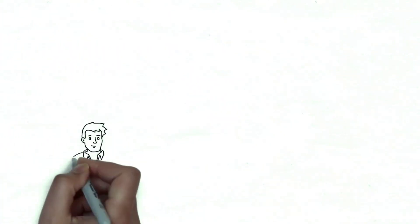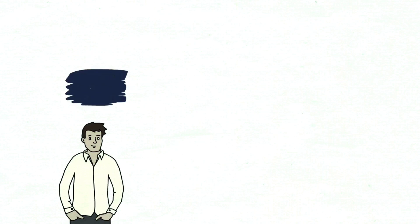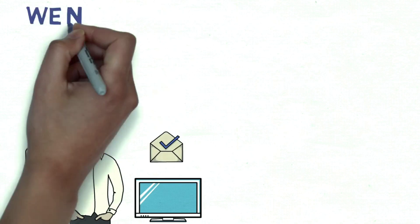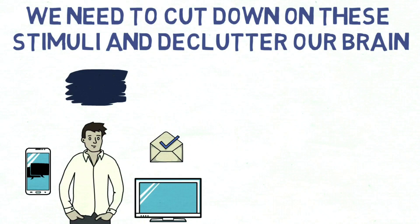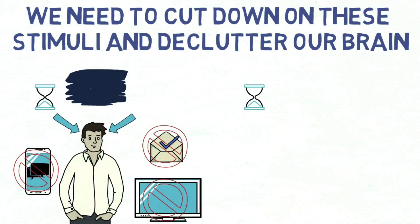Our evening routine then typically involves catching up with social media, watching television, or trying to answer those last-minute emails. We need to cut down on these stimuli and declutter our brain. Hence, your evening routine should be time you spend with yourself. This probably means eliminating many of the nighttime activities you have gotten used to and replacing them with new ones that will actually help you disconnect and focus on yourself. It means putting your technology to bed at least half an hour before you go to bed yourself, and instead seek stillness.